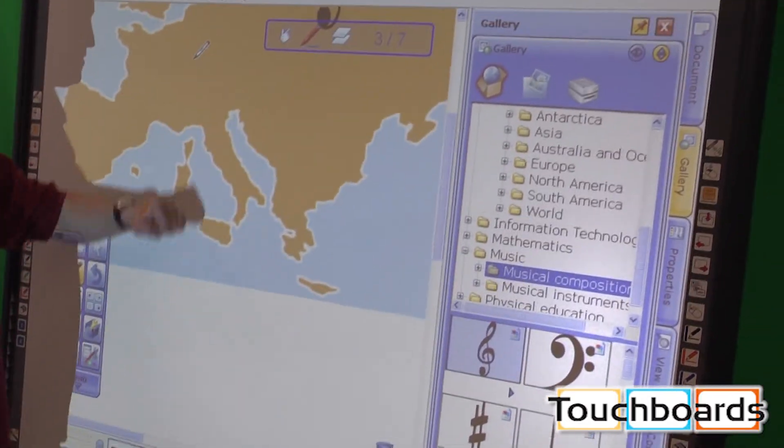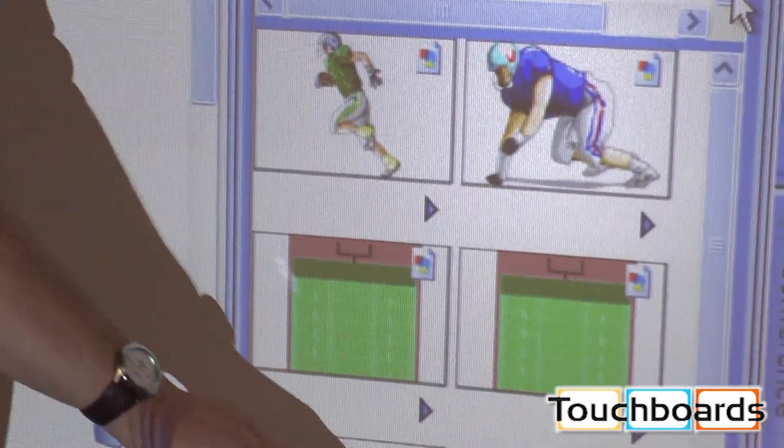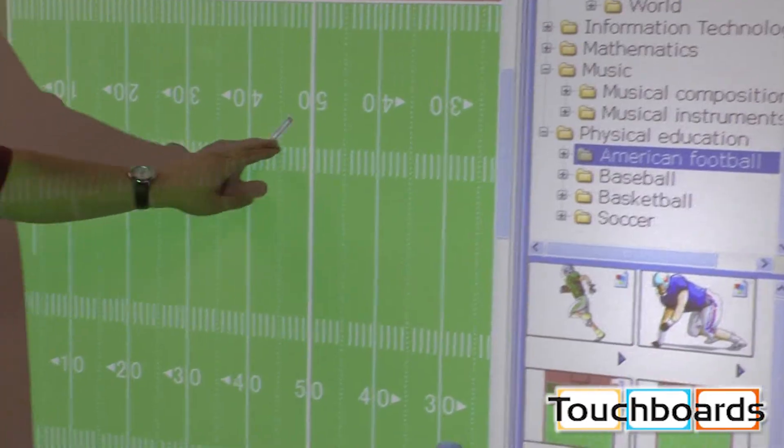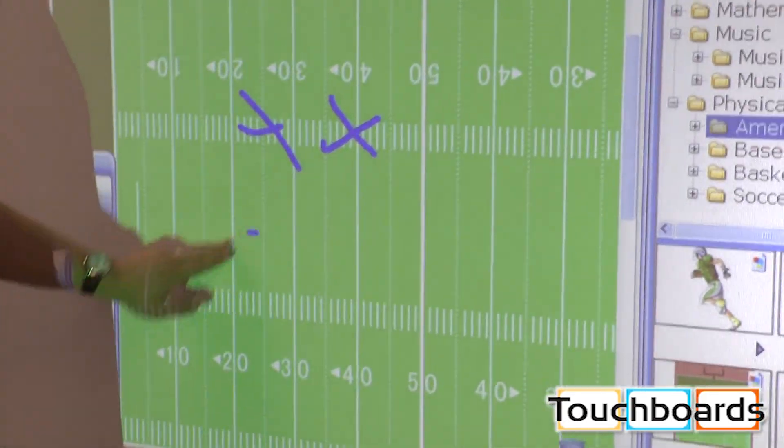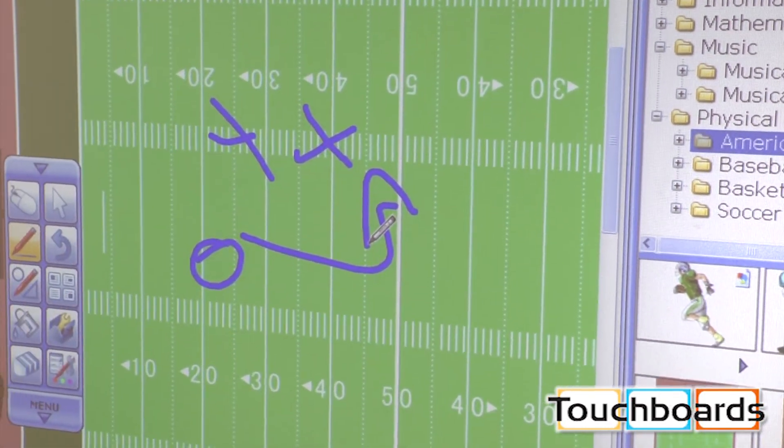New space here. You can just scroll up, get off our map. Here now we're in gym class. You can pull up a football field. This is great for coaches. You can draw your X's here, your O's, whatever you're going to do. You can save that image, you can print it out, hand it out to all the players.